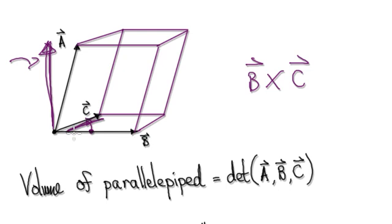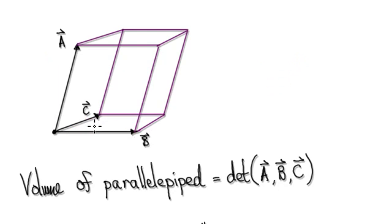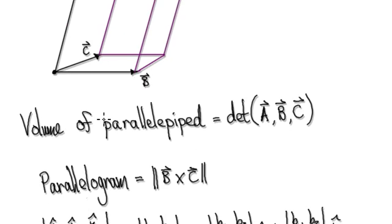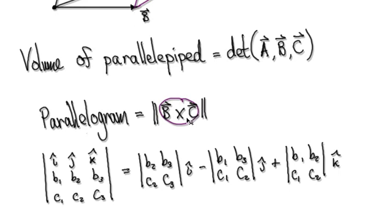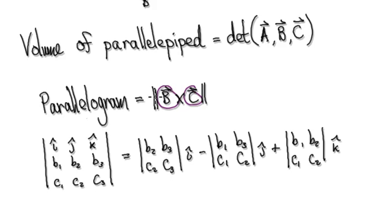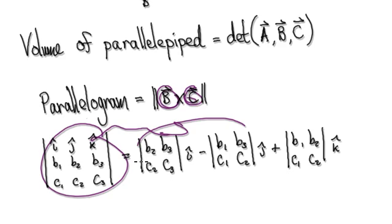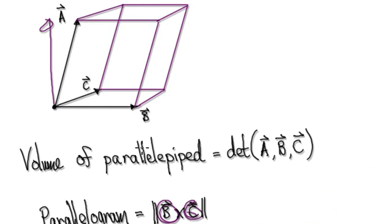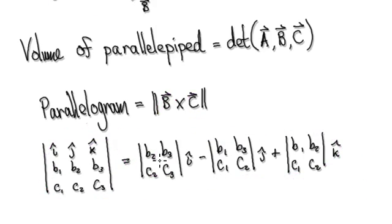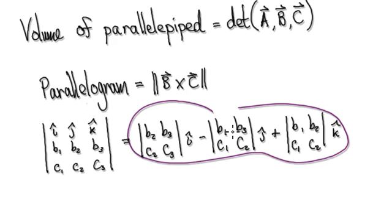The magnitude of this vector represents the area of this parallelogram. So the idea is that we're going to get the area of the parallelogram, and then multiply it with a vertical height from the bottom all the way to the top. This vertical height here would be the same as this vertical height here. We're going to use the cross product: b cross c gives us that vector, and the magnitude of this vector represents the area of the parallelogram.